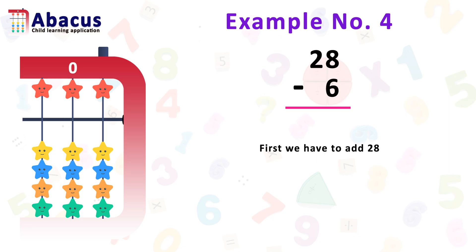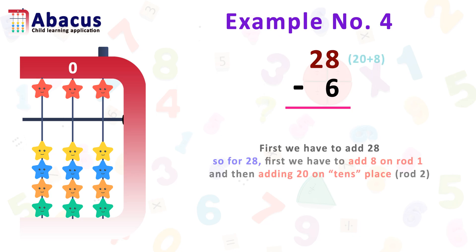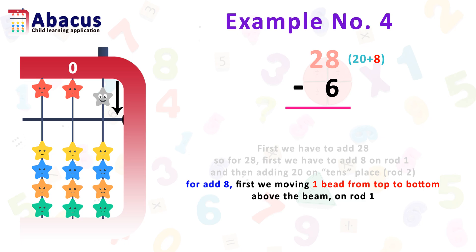Let me help you. For 28, first we are adding 8 on rod 1, then we are adding 20 on the 10th place. The 10th place is rod 2.